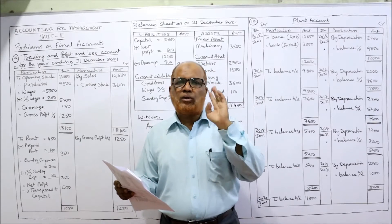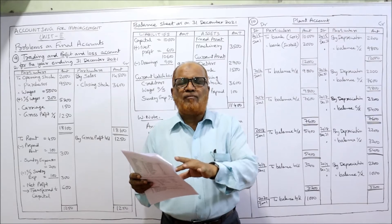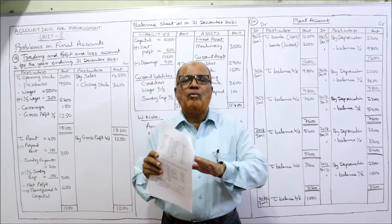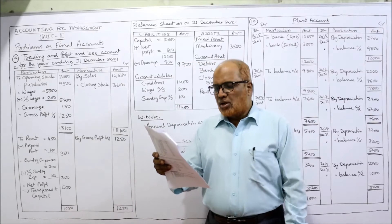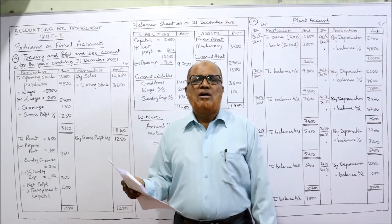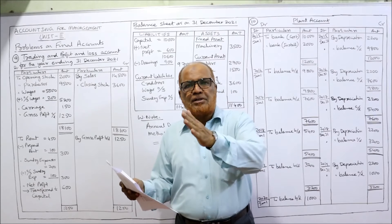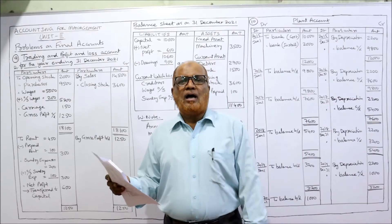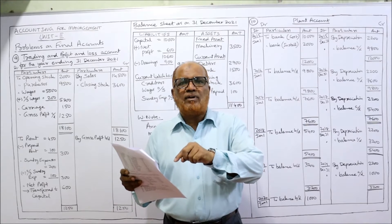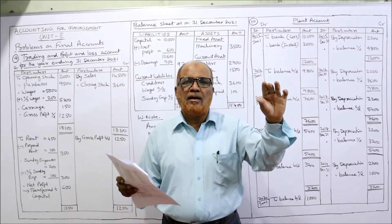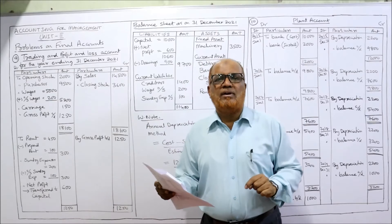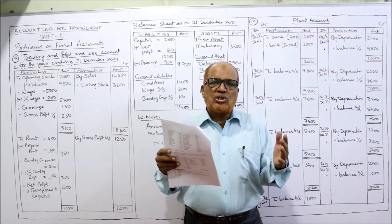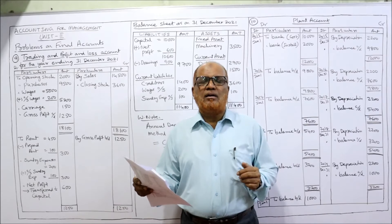Adjustment items will appear twice as usual. Adjustments: first, closing stock on 31st December 2021 is 3,600. Closing stock appears twice — on the trading account credit side and balance sheet asset side. Second, wages outstanding: the outstanding wages will be added to wages on the trading account debit side, and also shown as a current liability.